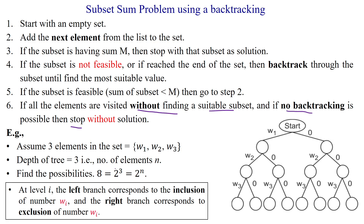This is how we find the sum of subset elements from a given set using the backtracking method. The state space tree plays a key role in finding the solution efficiently. At level i, the left branch shows a value is selected and the right branch shows it is not selected. The worst-case time complexity is O(2^n). Sometimes the solution is found early, giving very low complexity, but if the solution is in the last node, it reaches 2^n — so the time complexity for subset sum is exponential.